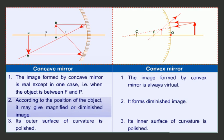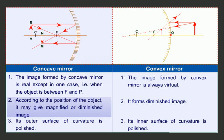According to the position of the object, a concave mirror may give a magnified or diminished image, whereas a convex mirror forms a diminished image. Students, the outer surface of curvature of the concave mirror is polished, whereas the inner surface of curvature of the convex mirror is polished.